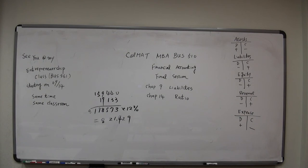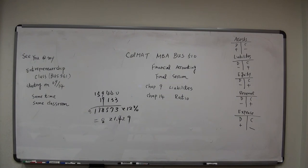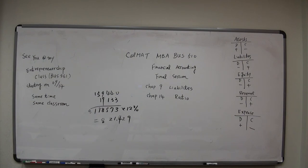Equity includes two parts: contributed capital and retained earnings. Your contributed capital may be small; however, during the years your company generates profit from operations, so you accumulate more and more retained earnings. So those two numbers together — that is your equity.